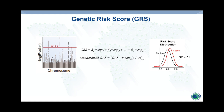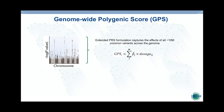This concept has been extended genome-wide to capture effects that might not be genome-wide significant but still contribute to disease risk. The genome-wide polygenic risk score — which I'll refer to as GPS — extends the GRS idea by taking all common polymorphisms across the genome, approximately 10 million of these, and uses weights defined by effect size estimates from the discovery GWAS.